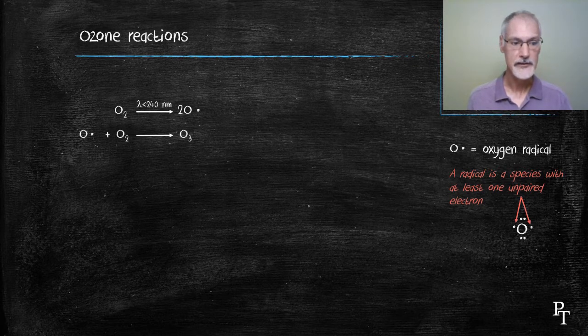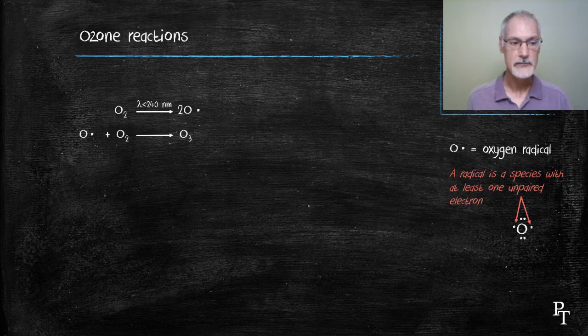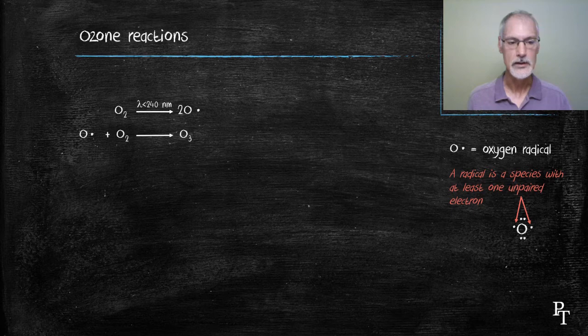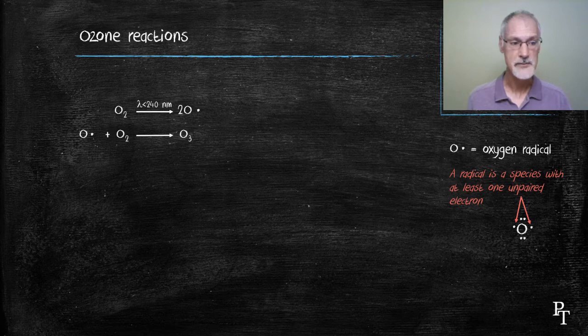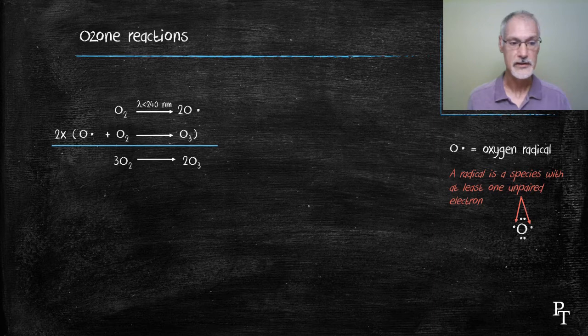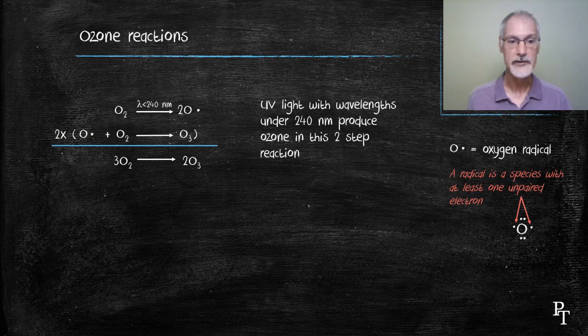The next step that happens in our process is that the oxygen radical combines or collides with another oxygen molecule to form ozone. Now, the fact that we form two oxygen radicals in our first reaction means that this reaction happens twice. If I add these two reactions together, I get the following overall reaction. So, wavelengths under 240 nanometers, essentially, I am producing ozone.